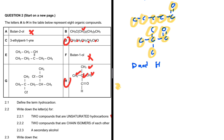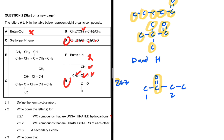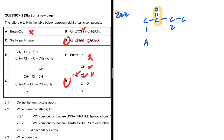Question 2.2.3 asks for a secondary alcohol. Looking at butan-2-ol: carbons one-two-three-four, the OH is on carbon two. The carbon bonded to the oxygen is bonded to two other carbons, making it a secondary alcohol. So the answer is compound A.